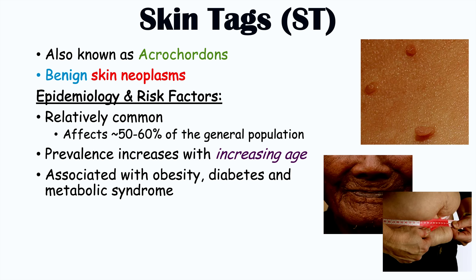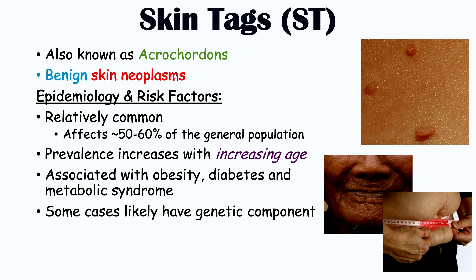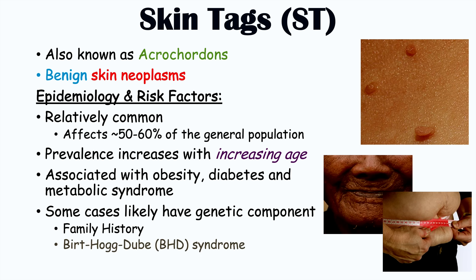In some patients, skin tags occur due to genetic reasons. There is likely a genetic component in some cases, as it has been found that if a patient has a family history of skin tags — for example, if their parent has them — they are more likely to have skin tags as well. There is also a rare autosomal dominant condition known as Birt-Hogg-Dubé syndrome, which increases the likelihood of skin findings, including skin tags and other benign neoplasms.